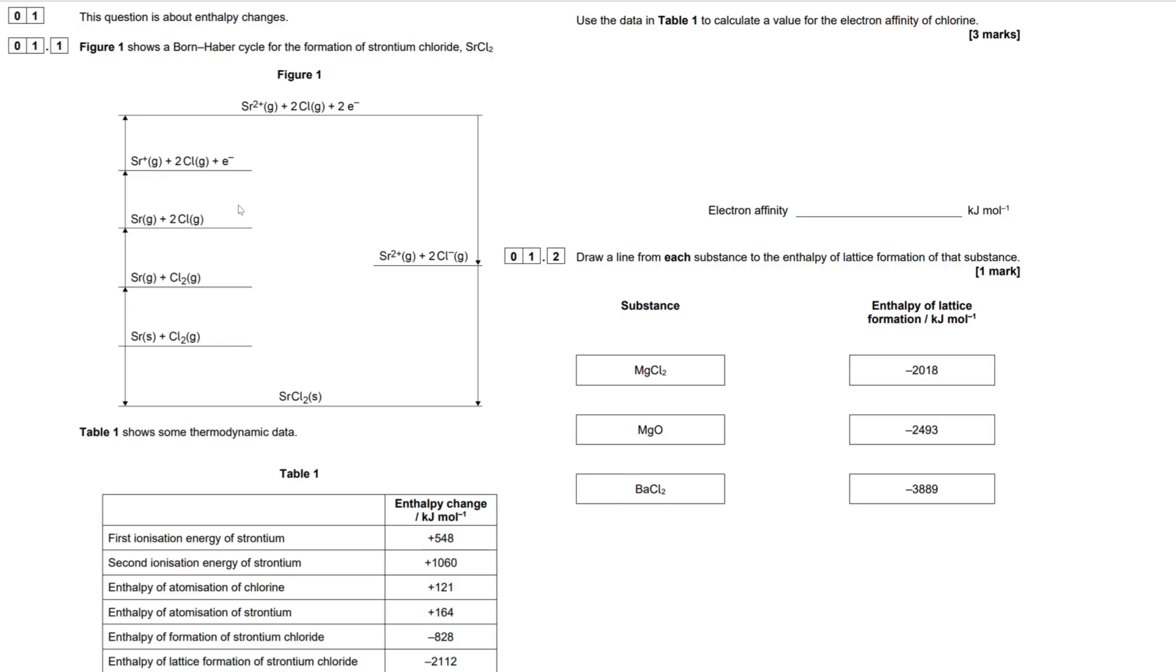Normally what you need to do for the Born-Haber Cycle questions is you normally need to fill in one of the blanks, one of the enthalpy change equation blanks. But in this case, they just completely skipped over that, and they just want our 3 marker for us to calculate the electron affinity of chlorine. So, what I'm going to do is I'm quickly going to locate on this Born-Haber Cycle which of these do they want us to do. Electron affinity of chlorine is going to be this right here, this arrow here, because the chlorine right here is gaining these two electrons onto itself, electron affinity, there's two moles of chlorine, so each mole is going to gain one electron each, forming our 2Cl minus ion.